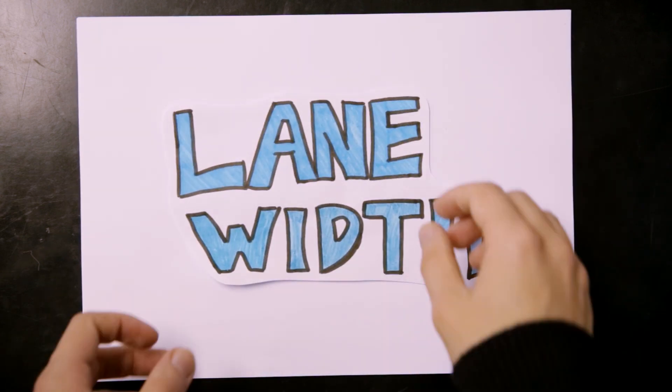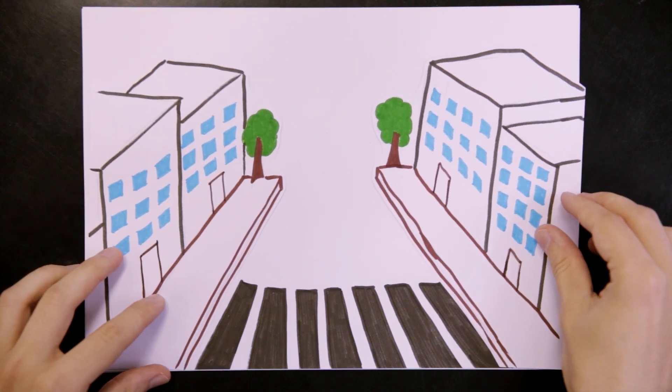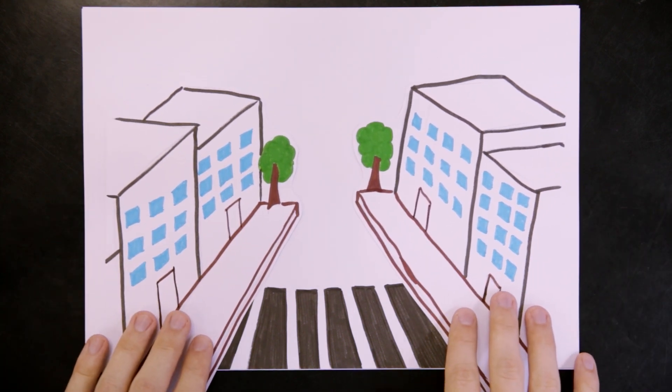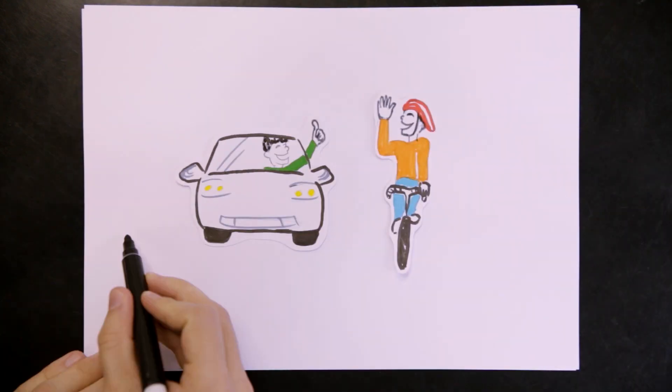Lane width. Narrower streets and wider sidewalks shorten pedestrian crossing distances and exposure to cars. Reduced street widths also help to lower vehicle speeds, which increases driver awareness of pedestrians and cyclists.